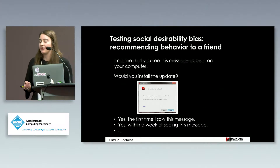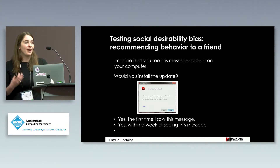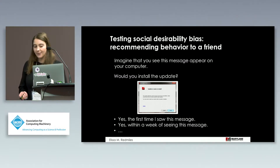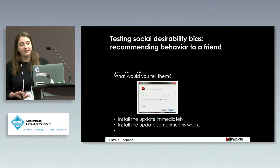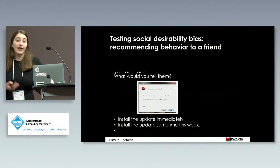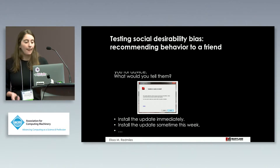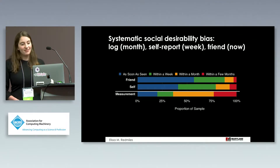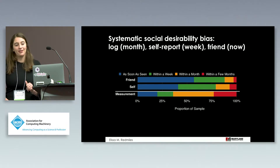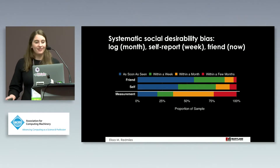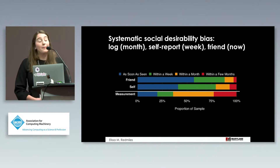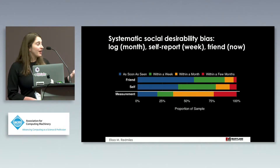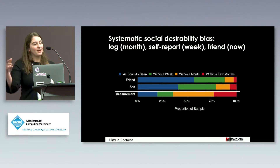To test whether social desirability bias was really occurring, we did a second variation of our survey asking people what behavior they would recommend to a friend. We asked: 'Imagine that a friend or relative sees the message below on their computer and asks you for advice — what would you tell them?' What we saw was that they thought the friend should update even faster than they thought they would update themselves, and even faster than the measurement data showed people really update. This is clear evidence of social desirability bias, but it appears to be systematic.